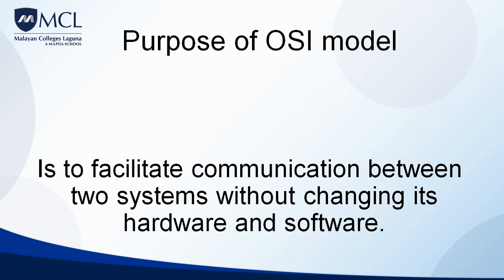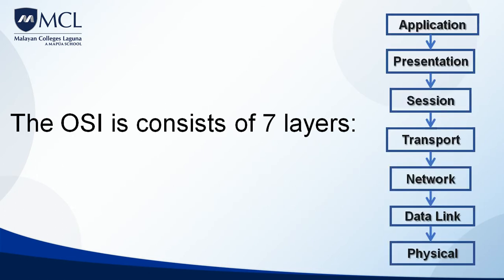The purpose or function of the OSI model is to facilitate communication between two systems without changing its hardware and software. It's like the rules and regulations of a communication system so there's no chaos when they communicate with each other. OSI consists of seven layers.